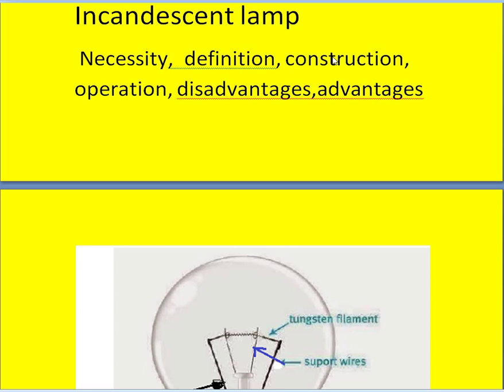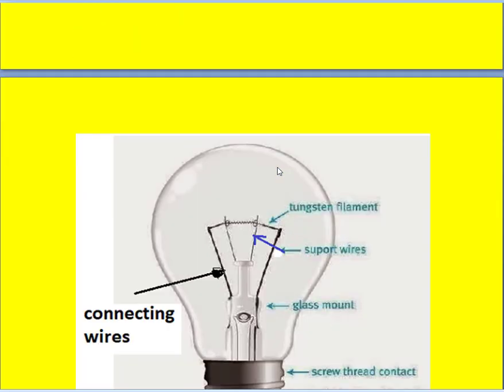And coming to the construction, so it will have a bulb like this, a thin bulb, a transparent bulb. And it will have a filament like this. It is normally made of tungsten and it will have the supporting wires like this. This is one supporting wire, this is another supporting wire.